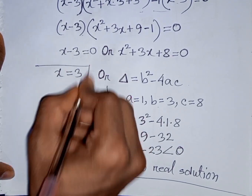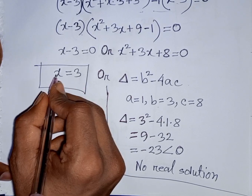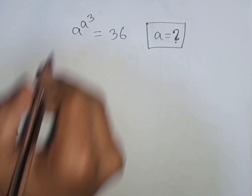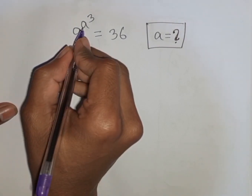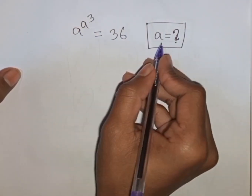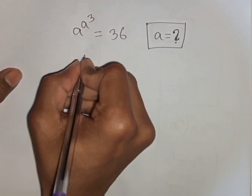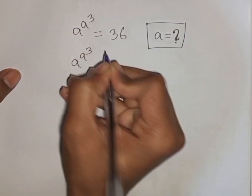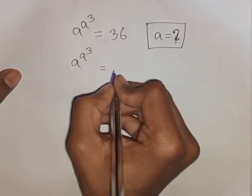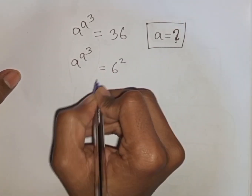Our final answer will be x equal to 3. So 3 is the value of x. This is our final answer. Now, how to solve A^(A³) equal to 36. Find the value of A. We have A^(A³) equal to 36, which can be written as 6².